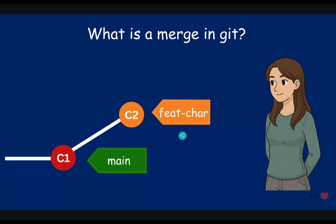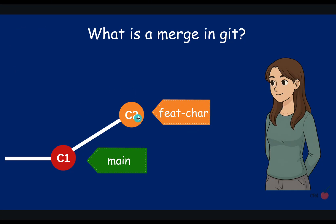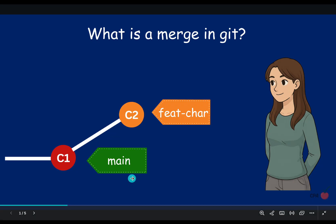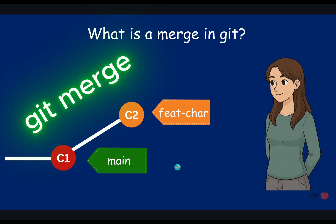Alex has worked on a new feature branch called feature-chair and she wants to make this new feature also available in the main branch. She wants to integrate her changes from the feature branch to the main branch. This process is called merging in Git.